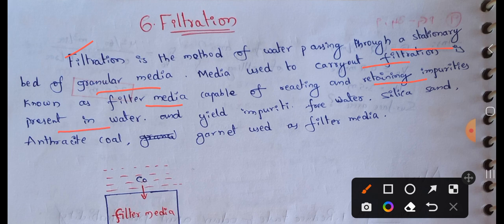Water impurities include suspended particles, bacteria, and other contaminants. Using filter media, we remove these impurities and yield impurity-free water. Filter media materials include silica sand, anthracite coal, and garnet.